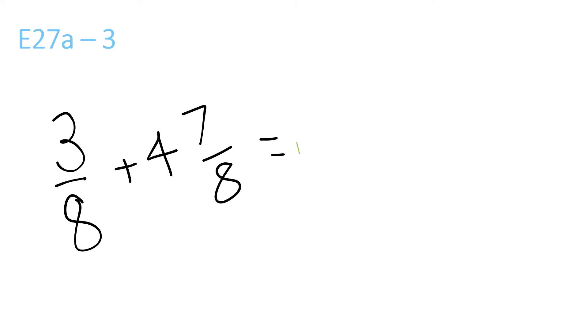4 plus nothing is 4. 7 plus 3 is 10 over 8, because that stays the same. 10 over 8 equals 1 and 2 over 8. 1 and 2 over 8 plus 4 is 5 and 2 over 8, which equals 5 and 1 over 4.